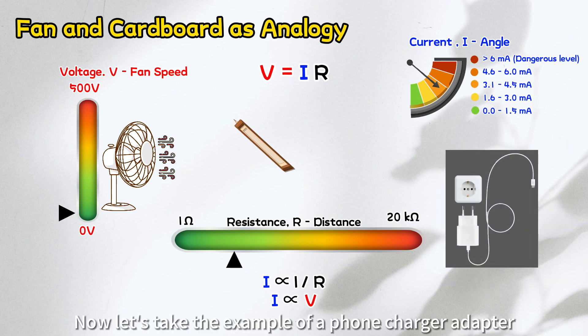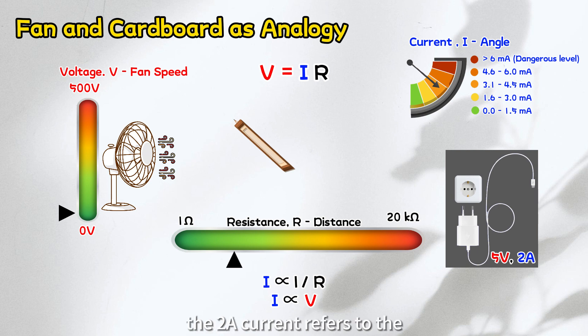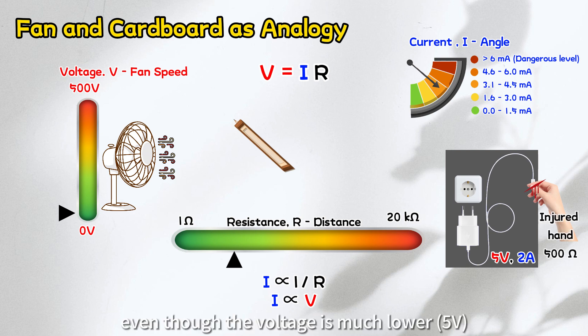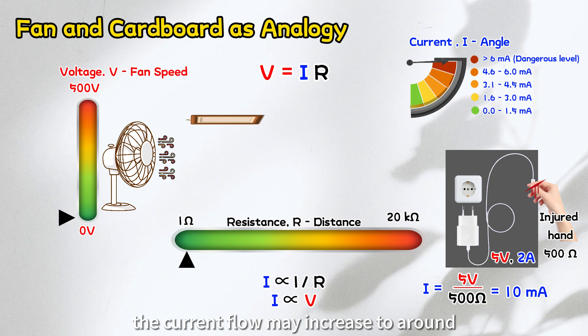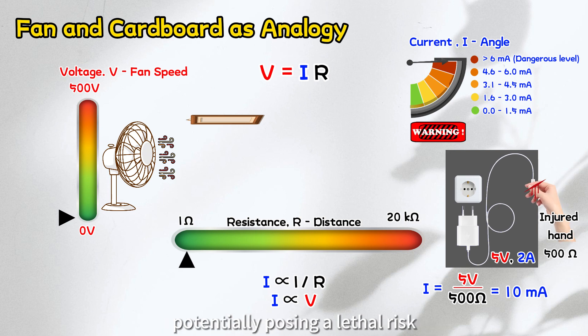Now, let's take the example of a phone charger adapter labeled as 5 volts and 2 amps. The 2 amps current refers to the current flowing through the phone when charging. If a person accidentally touches the bare terminal with wet or injured hand, even though the voltage is much lower than in the previous case, the lower body resistance still poses a significant risk. For instance, if the body resistance is only 500 ohms, the current flow may increase to around 0.01 amps or 10 milliamps. The person might not be able to let go, potentially posing a lethal risk.